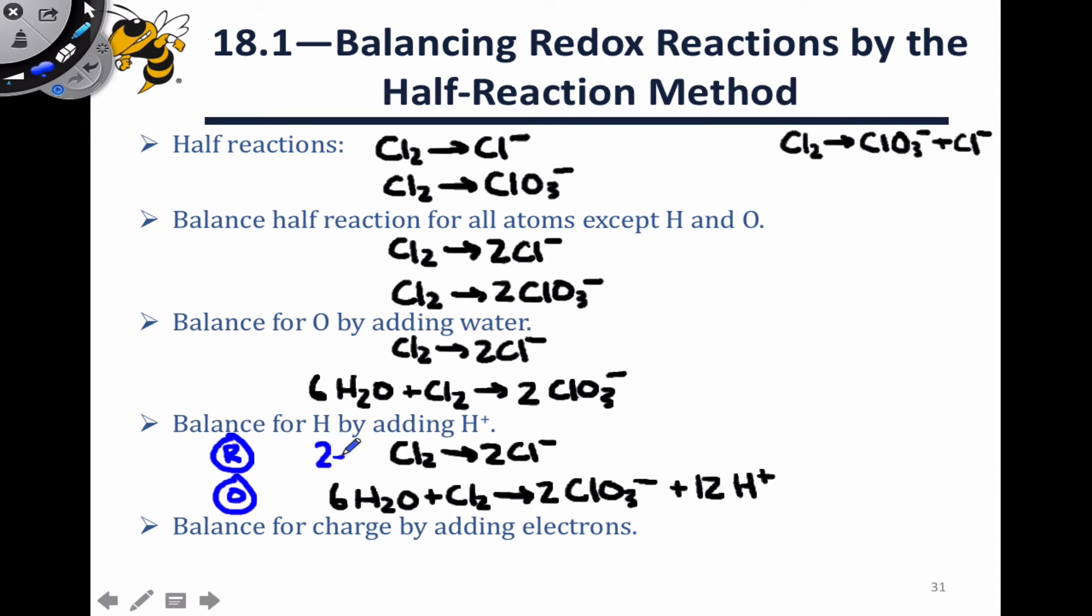And so we need to add two electrons here to account for that, so that we have a total charge of negative 2 on the reactant side, negative 2 on the product side.